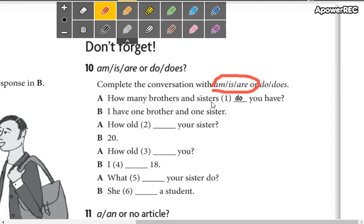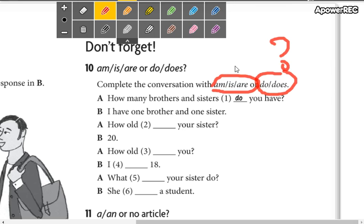No pueden poner 'is play' — yo estoy jugar en el parque — no. Am, is, are no se utilizan con otros verbos de acción. Do o does se utiliza solo en forma interrogativa; son auxiliares de la forma interrogativa. Por ejemplo, aquí: 'your sister' — no hay ningún verbo, entonces solo coloco am, is, o are. Pero acá hay un verbo, entonces se coloca do o does. Check carefully and complete it.